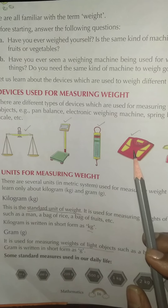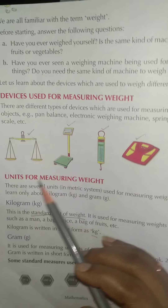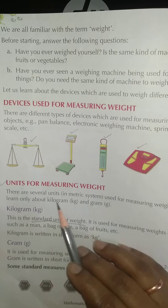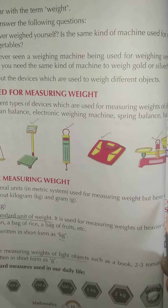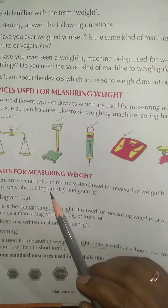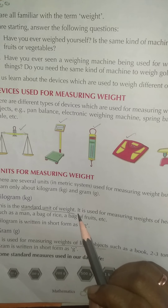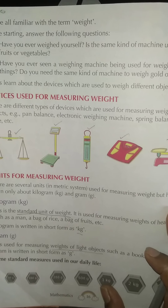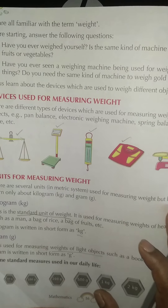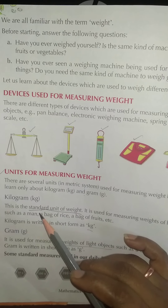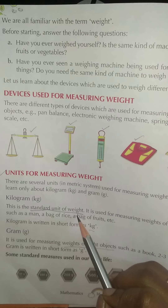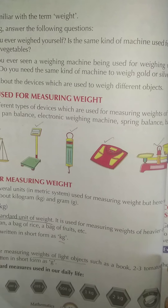The next topic is units for measuring weight. There are several units in the metric system used for measuring weight, but in this chapter we will learn only about kilogram and gram. To measure weight, different metric systems are used, but here we focus only on kilogram and gram.